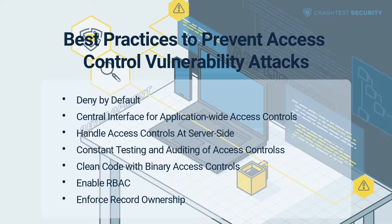Clean code with binary access controls. Every developer should ensure that their source code includes rules that declare access for every resource at the code level, and the access should be denied by default. It is also important to use secure coding practices to avoid common programming errors that attackers target for privileged access.